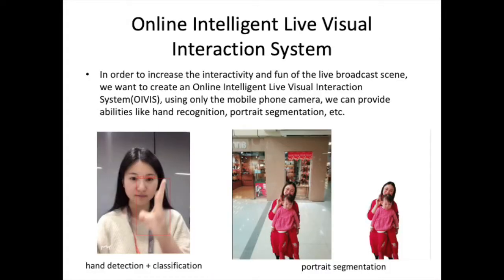In order to increase interactivity and fun of the live broadcast scene, we want to create an online intelligent live-visual interaction system called OIVIS. Using only the mobile phone camera, we can provide abilities like hand recognition, portrait segmentation, and more.